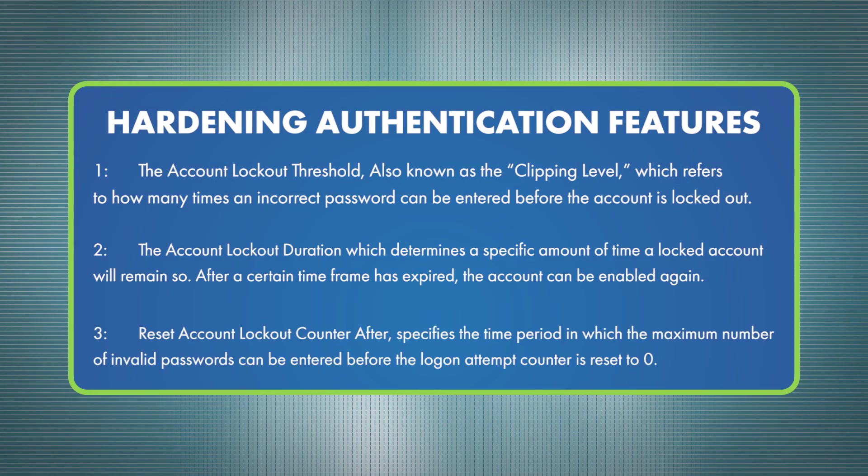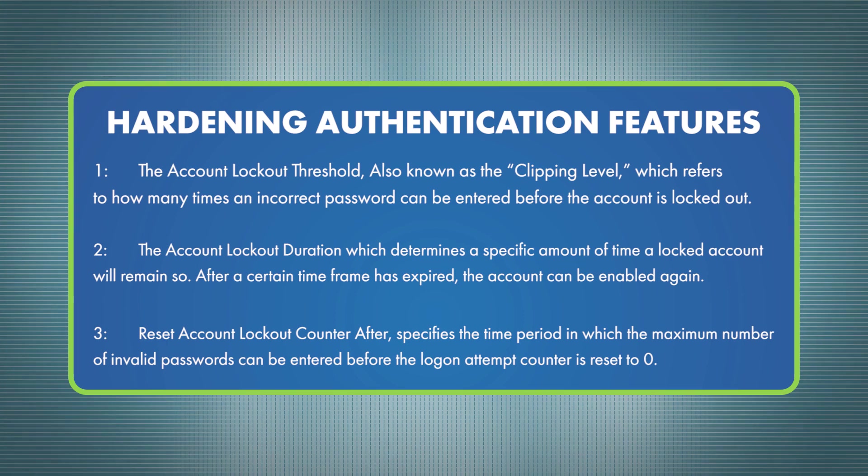Three, reset account lockout counter after — this specifies the time period in which the maximum number of invalid passwords can be entered before the logon attempt counter resets to zero. For example, if the threshold is three invalid attempts within an hour and an employee enters three invalid passwords, the account is locked. However, if the employee attempts two invalid passwords within one hour and waits until after the hour passes to enter a third, the logon attempt counter resets to zero, and the employee can attempt to log on again.